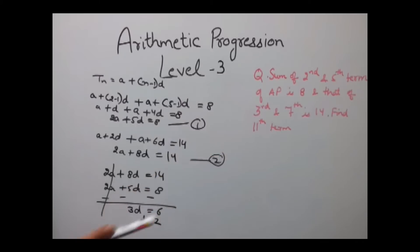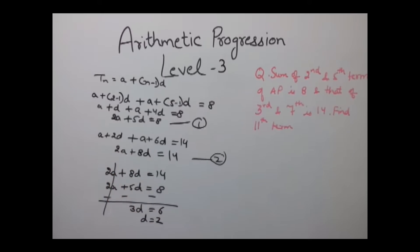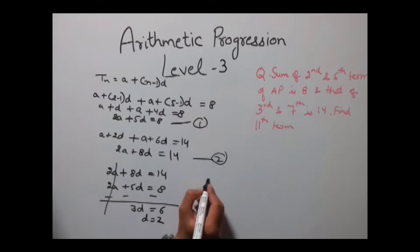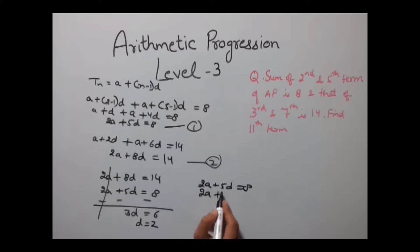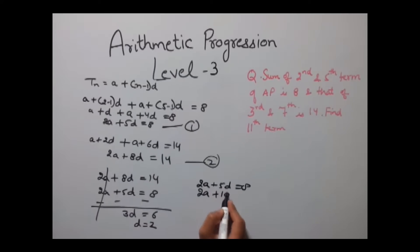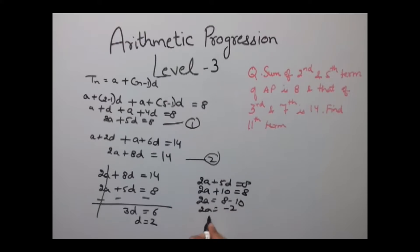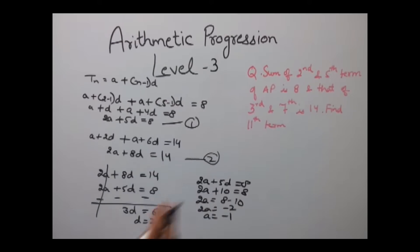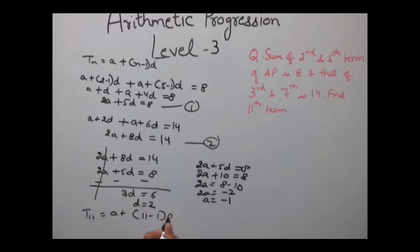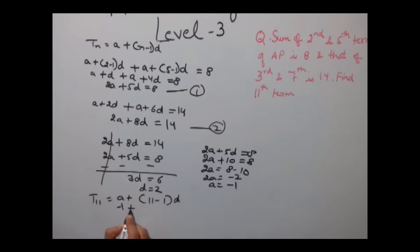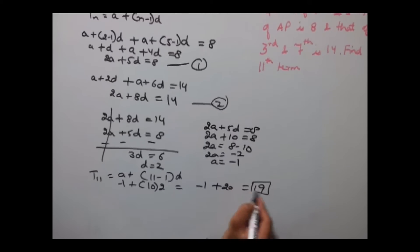Now we need to find the 11th term, but first we need the value of a. Substituting d = 2 into equation 1: 2a + 5(2) = 8, so 2a + 10 = 8, giving 2a = −2 and a = −1. Therefore T11 = a + (11−1)d = −1 + 10(2) = −1 + 20 = 19.